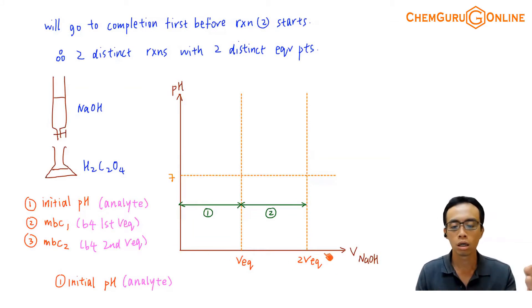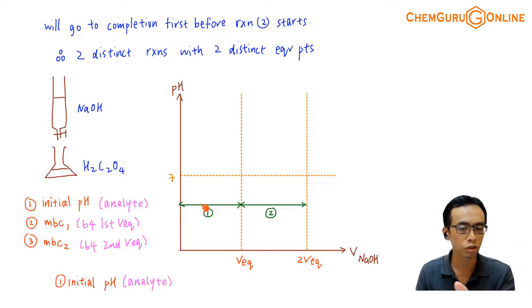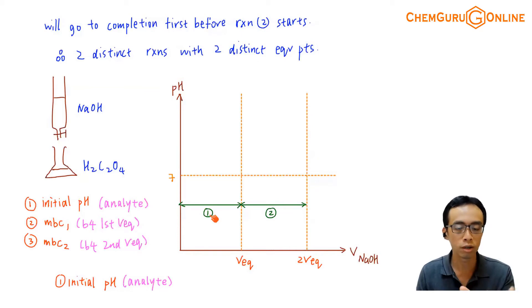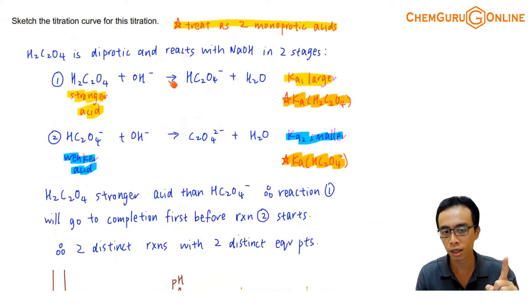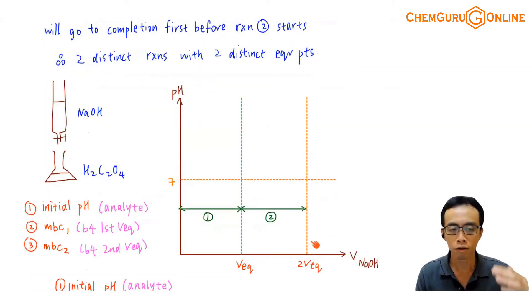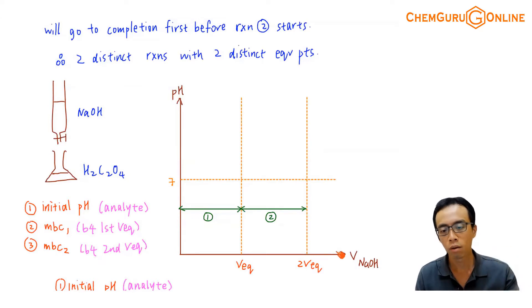We have two equivalence volumes. This first region, from 0 to the first VEQ, is reaction number 1. From the first VEQ to the second VEQ, this will be reaction number 2. Of course, you just think of it that way — you don't need to physically draw it in. I am adding sodium hydroxide along the way, and we want to plot what happens to the pH of the solution.